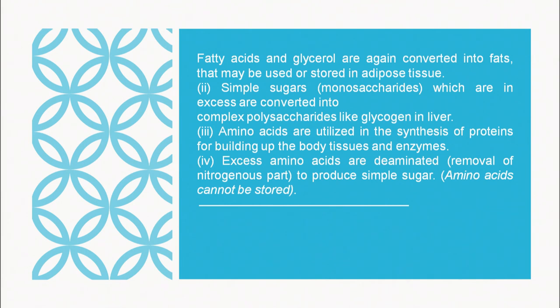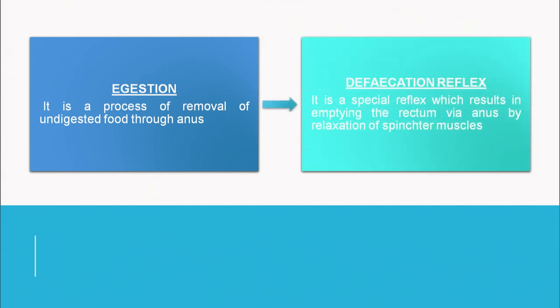Amino acids are utilized in the synthesis of proteins. Those that are in excess and not used for building up the body are deaminated and removed from the body. The last step of digestion is the removal of undigested food through the anus via the defecation reflex — a special reflex that results in emptying the rectum through the anus by relaxation of the sphincter muscles.